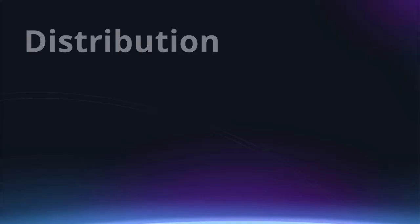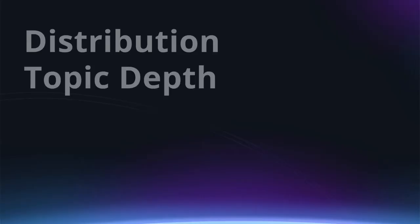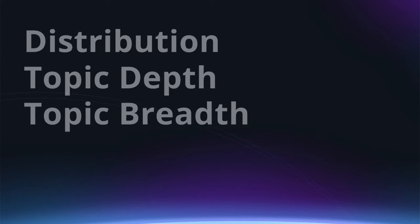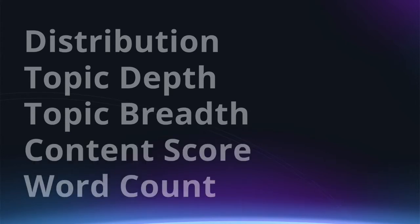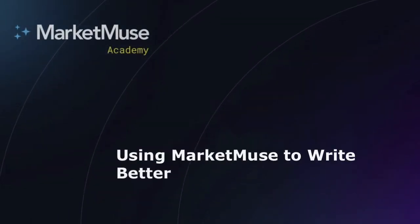Let's examine some fundamental metrics in MarketMuse that help you create and optimize content better and faster. In this video we look at distribution, topic depth, topic breadth, content score, and word count. Hi, I'm Steven Jeske. Let's take a look at how these MarketMuse metrics work together.